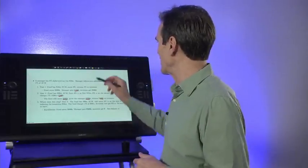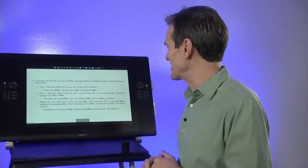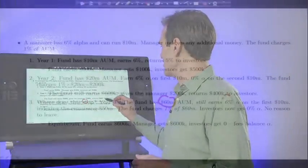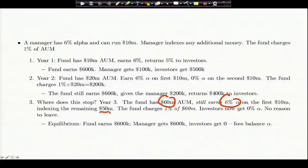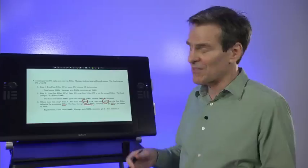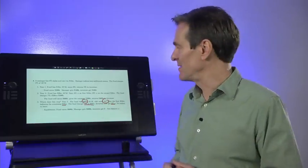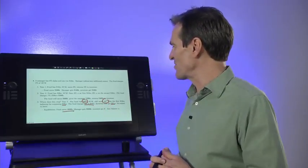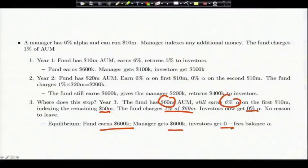When the fund has $60 million assets under management, it still earns 6% on the first $10 million and puts the remaining $50 million in the index. It charges 1% of $60 million—the full $600,000. So investors get zero alpha, but zero alpha is what they can earn on the index, so there's no reason to leave. If investors do leave, the alpha goes back up and brings more money back in. In the end, the fund earns $600,000. The manager gets it. Investors get no alpha, but that's their equilibrium rate of return, and the fees balance the alpha.